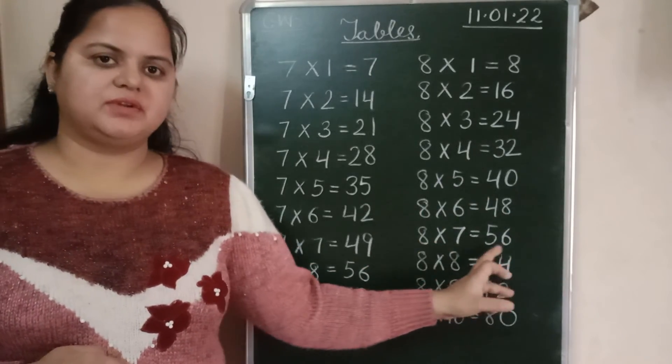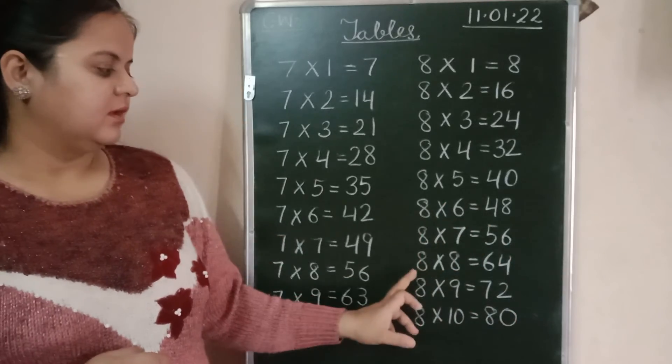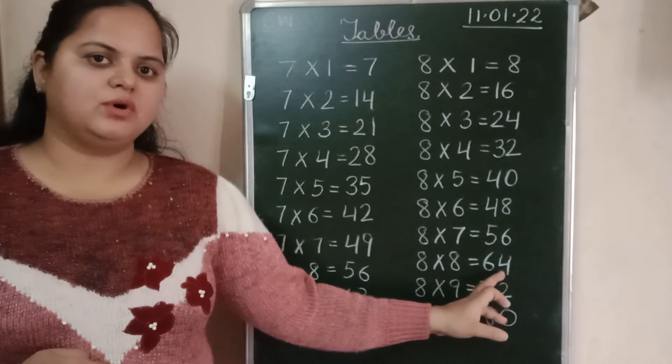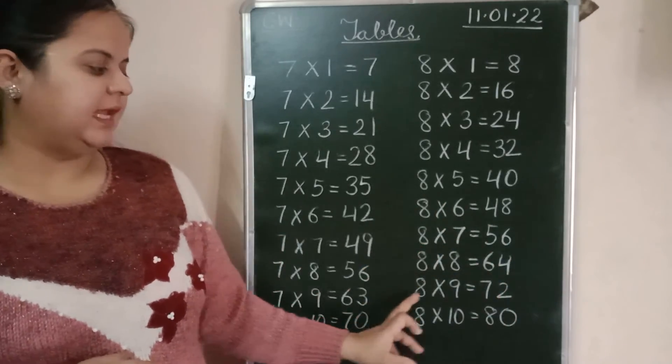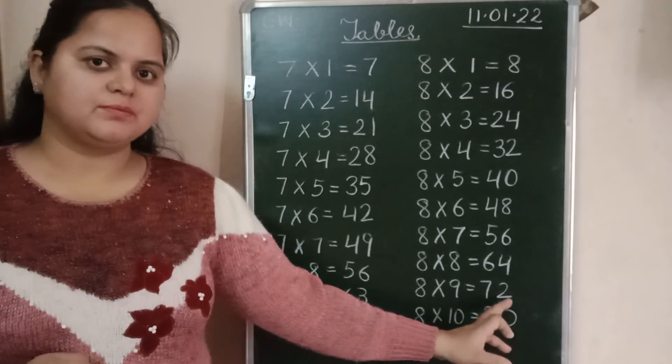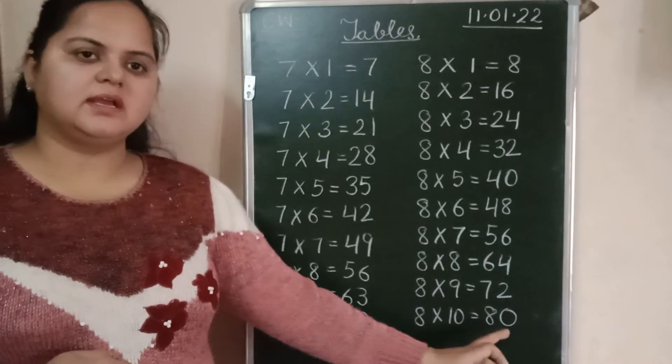8-7s are 56. 8-8s are 64. 8-9s are 72. 8-10s are 80.